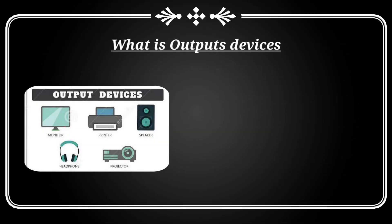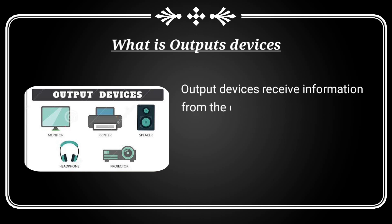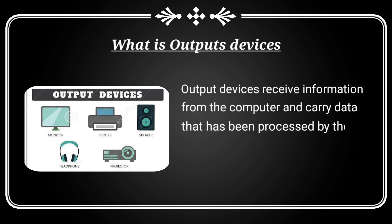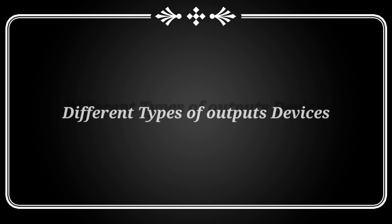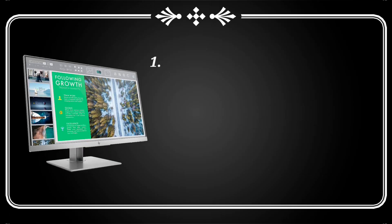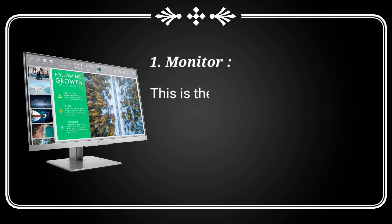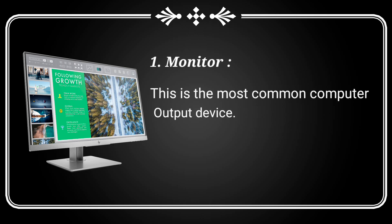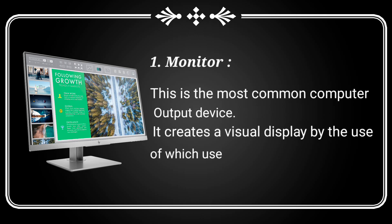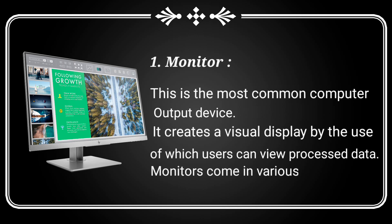What are output devices? Output devices receive information from the computer and carry data that has been processed by the computer to the user. Different types of output devices: Monitor — this is the most common computer output device. It creates a visual display by the use of which users can view processed data. Monitors come in various sizes and resolutions.